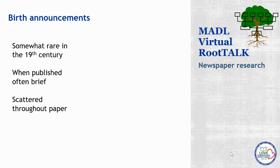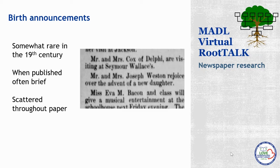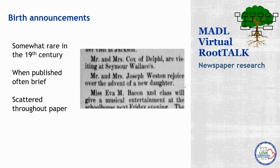Here's a listing from the Paw Paw True Northerner paper from November 21st, 1888, in the local news column. The second item reads: Mr. and Mrs. Joseph Weston rejoice over the advent of a new daughter. So we have the last name, the father's first name, and the fact that they had a baby girl — phrased very socially correctly as 'advent of a new daughter.' This is great for genealogical purposes: we have the date of the paper, November 21st, 1888, and the location. If we haven't found an original birth record for this new daughter, we know to look at the county or state level for a birth record from this timeframe for a baby girl whose father's name is Joseph Weston. If we haven't located a vital record, this is proof of the birth of a child.